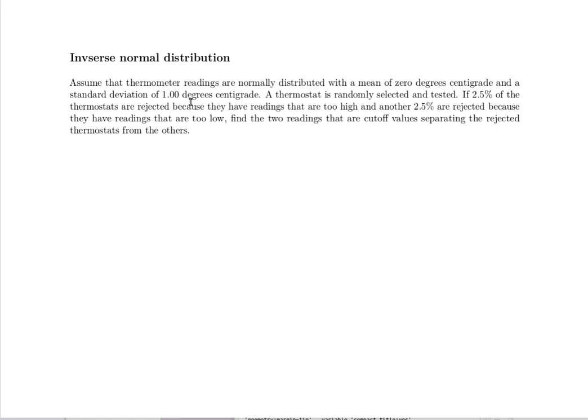A thermostat is randomly selected and tested. If 2.5%, that would be the same as a 0.025 probability, of the thermostats are rejected because their readings are too high and another 2.5% are rejected because their readings are too low, then find those two readings that are cut off values separating the rejected thermostats from the others.